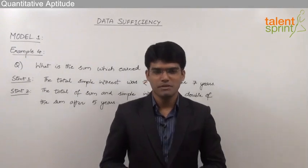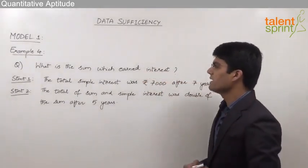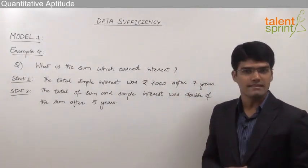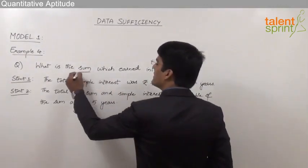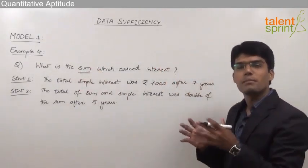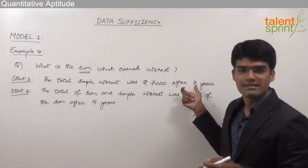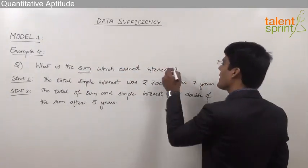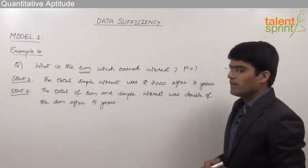Let us now look at the next example from Model 1 of Data Sufficiency. The question here is: what is the sum which earned interest? We need to find out that sum which has earned interest, which is nothing but the principal amount. On this sum we have earned interest — we always earn interest on the principal — so we need to find out the principal P in this question.